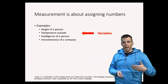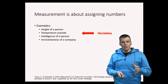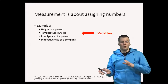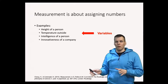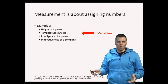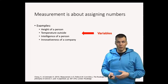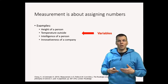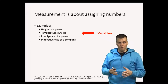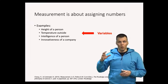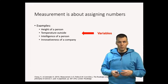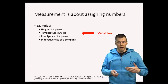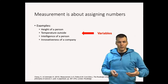These quantities are variables, meaning they vary. Some people are taller than others, sometimes it's colder or warmer outside, some people are smarter than others, some companies are more innovative than others. So there is some kind of variation in the objects or units that you study, and the idea of measurement is that you want to assign numbers to that variation — to quantify it.